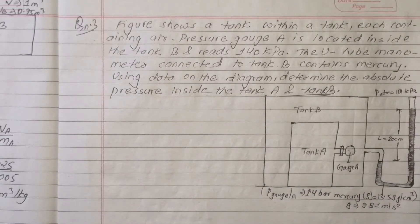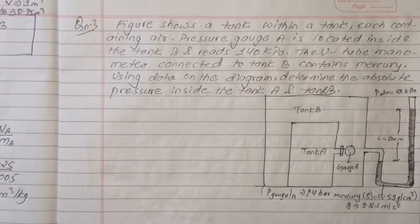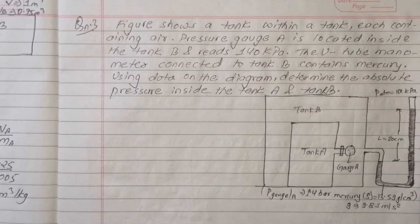The pressure gauge reads 140 kPa. A manometer connected to tank B contains mercury. Using the data on the diagram, determine the absolute pressure inside tank A and tank B.